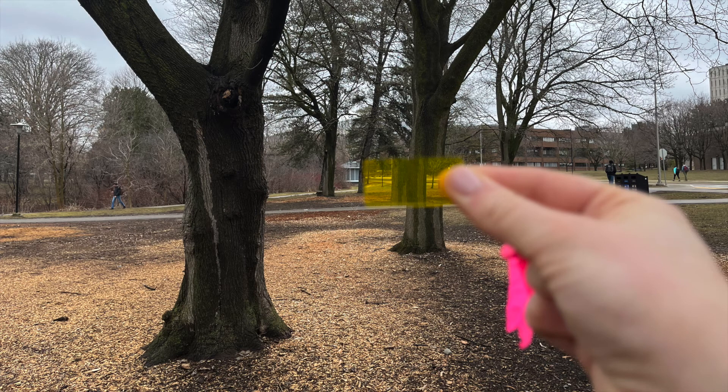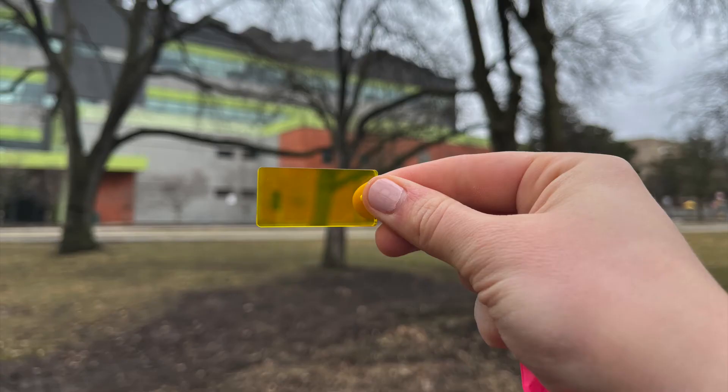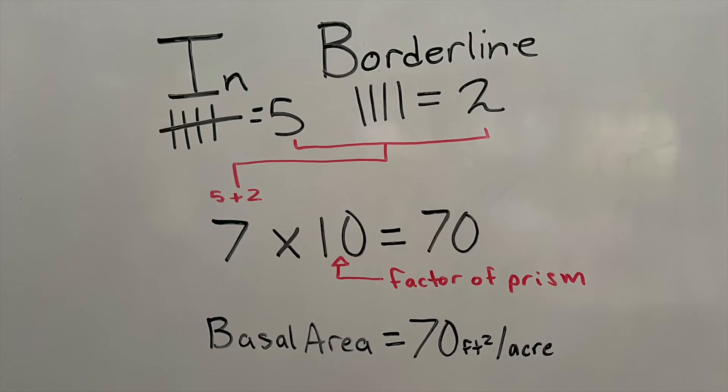In this image, we are showing what in looks like through your forestry prism. In this image, we are showing what out looks like through the forestry prism. This is what borderline looks like through your forestry prism. Now it's time for calculations.